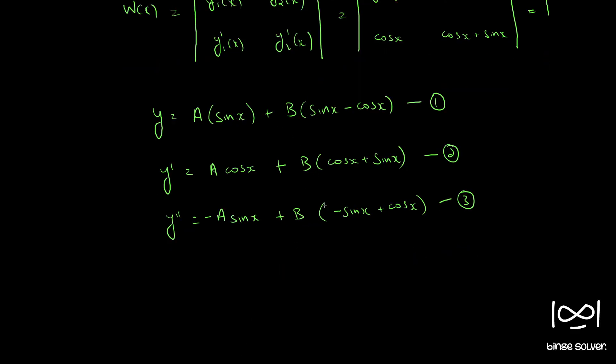If you see equations 3 and 1, when added together results in 0. So using 1 and 3, we can write y double dash plus y equal to 0. So this is the required differential equation. That is the solution.